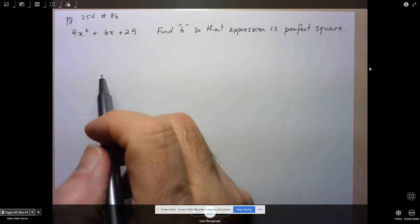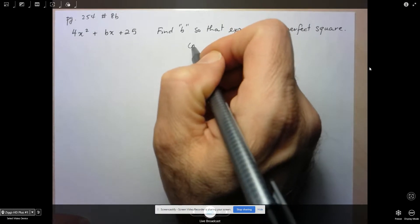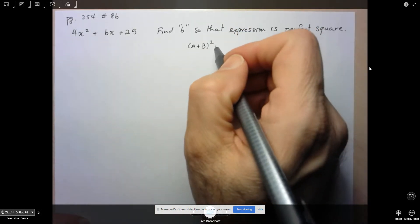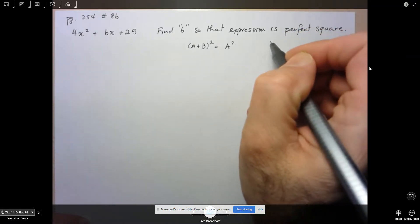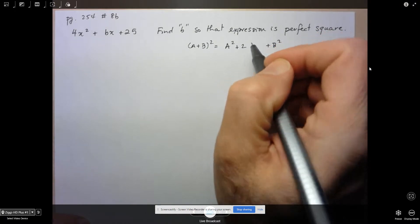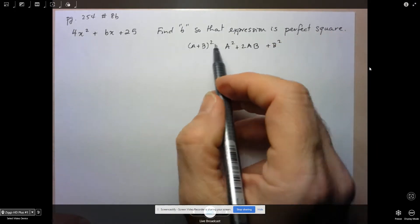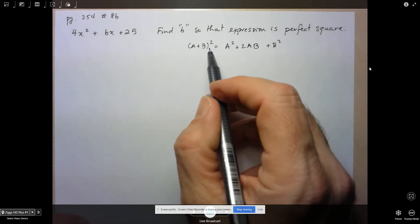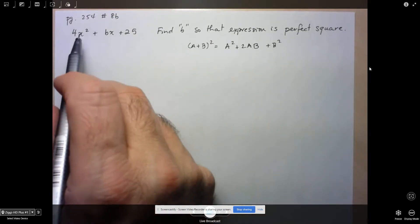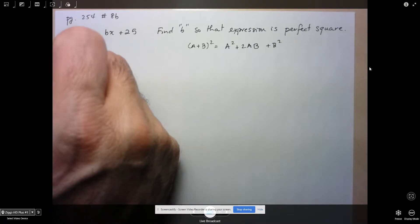So first of all, let's remember what a perfect square looks like. If I have a plus b, and I square it, I square the first, I square the last, and then it's twice the product of first and last. In order for something to factor into a perfect square, I need the first term and the last term to be a perfect square. So this is only going to work if the first and last term are perfect squares. And I notice that they are.